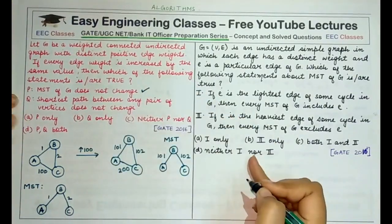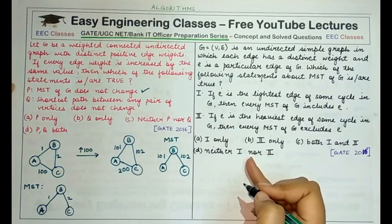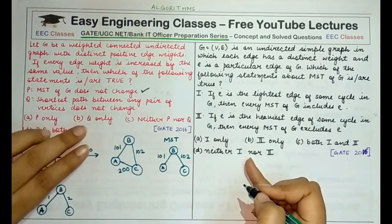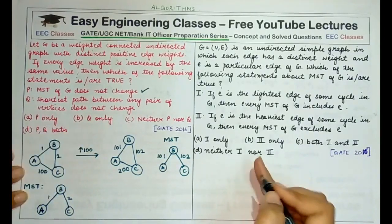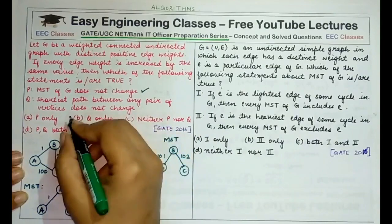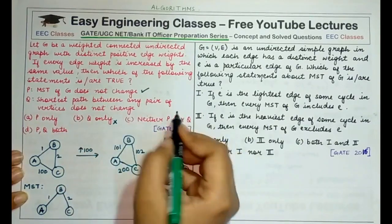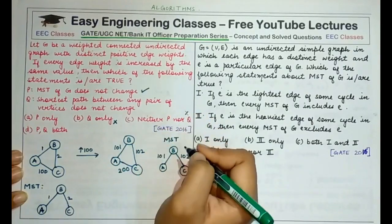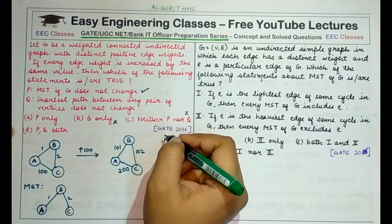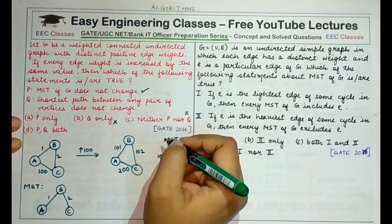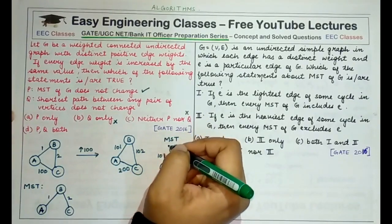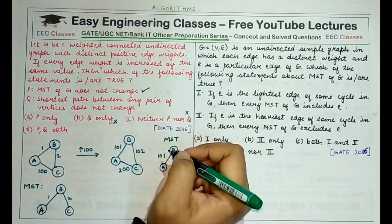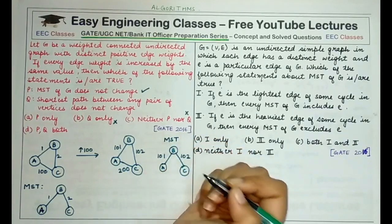Since statement P is true, we can eliminate some options. Q only cannot be an answer, and neither P nor Q cannot be the answer. We are left with options A (P only) and D (P and Q both), so we must now check statement Q.